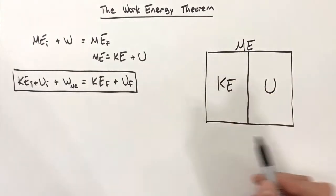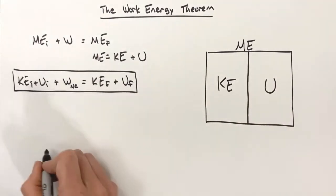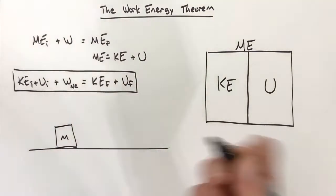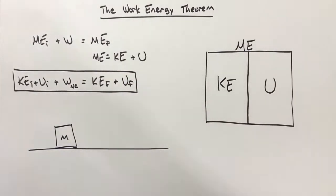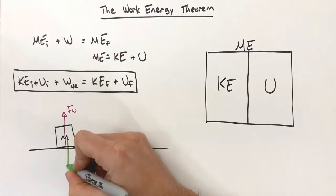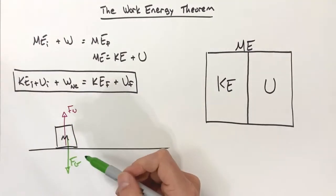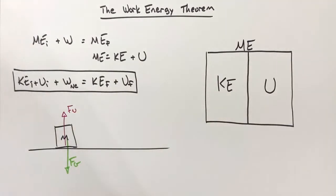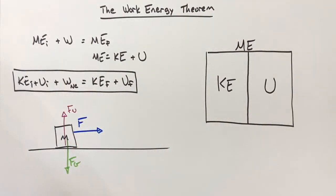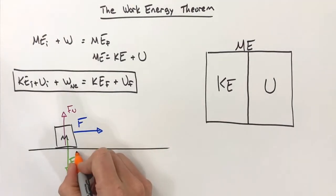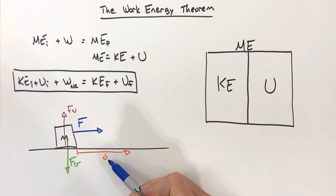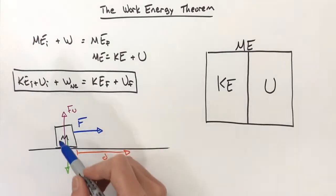Let's take a simple situation: a box with some mass m sitting on the ground. The normal force acts upward on it and gravity pulls downward. The box is not accelerating vertically, so these forces are equal in magnitude. Then we come along and push on this box with some force F, causing it to move forward through some displacement.